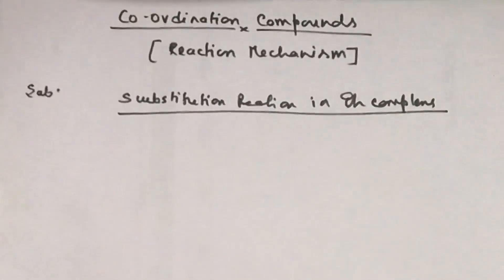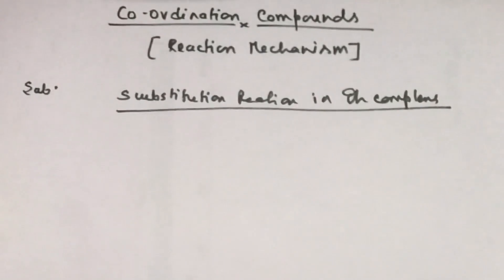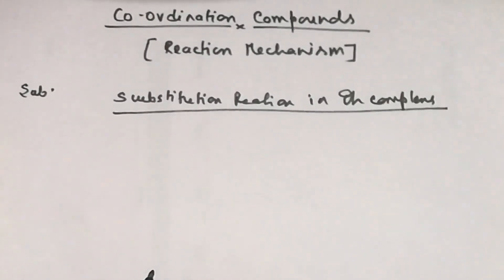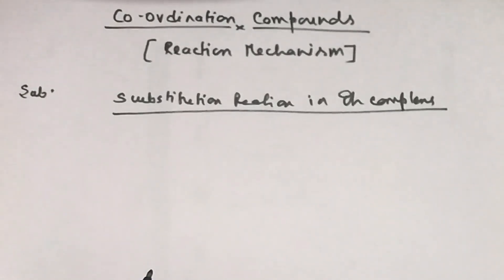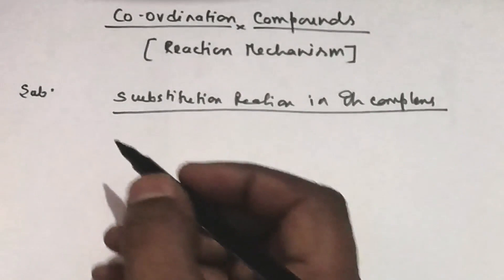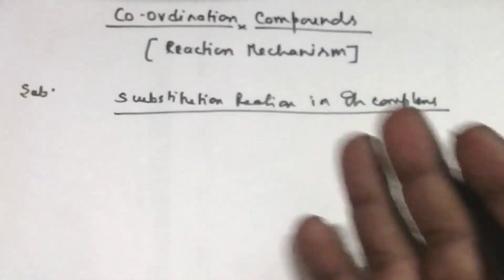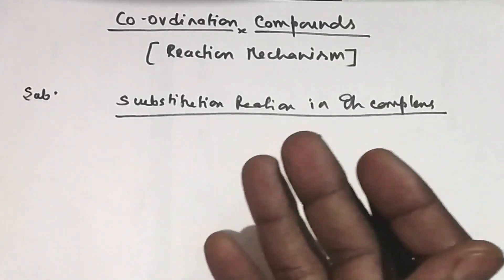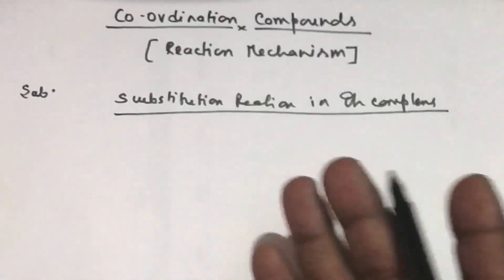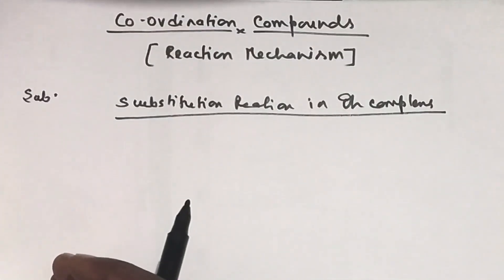Today we are going to discuss the reaction mechanism in coordination complexes or compounds, starting with substitution reactions in octahedral metal complexes. Most reactions in inorganic chemistry are ionic in nature and take place almost instantaneously, hence no mechanism is involved. In substitution reactions involving octahedral complexes, one ligand is replaced by another ligand.